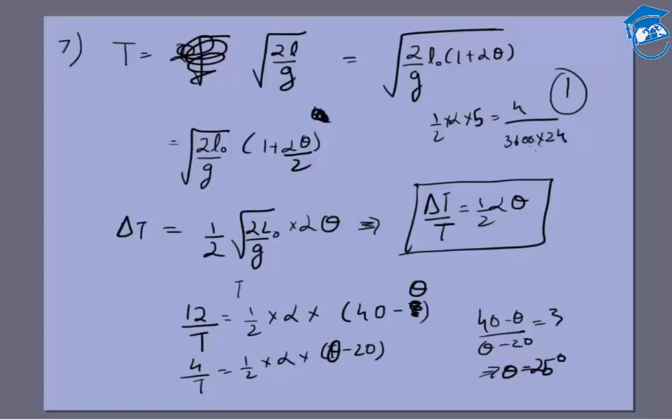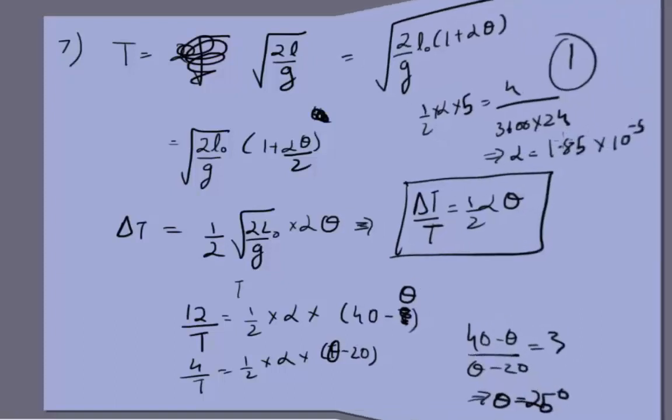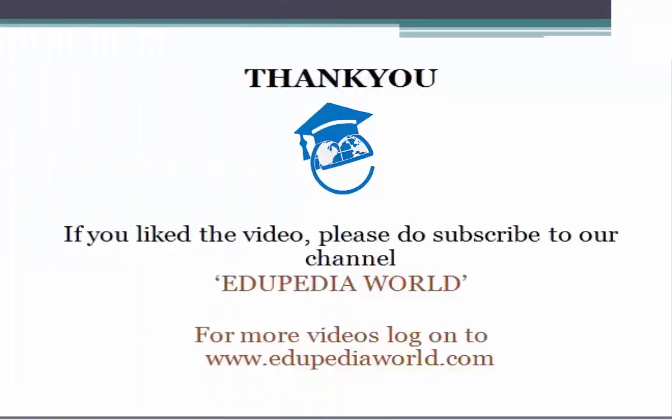And if you try to calculate it, you'll get the correct value: alpha equals 1.85 × 10⁻⁵. This completes the solutions. Thank you.